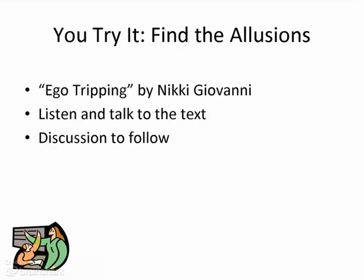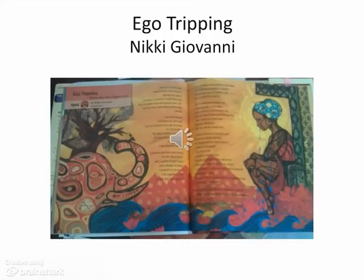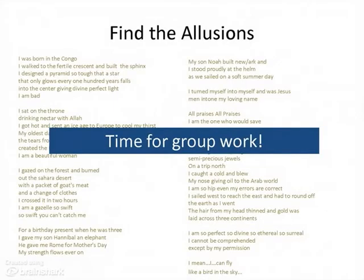Now we're going to listen to "Ego Tripping" by Nikki Giovanni, and I hope it makes you laugh a little, but I also hope it makes you think. I would like you to listen and talk to the text by making notes on your handout and underlining the allusions you find. When this slide appears, Nikki Giovanni starts to recite her poem. At this point, I would put students back into their groups and give each group perhaps one or two stanzas, asking them to find as many allusions as they can and explain how the allusions contributed to their understanding of the poem.